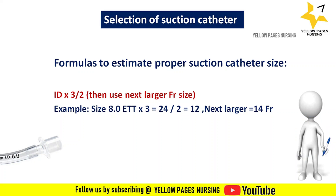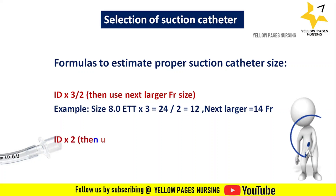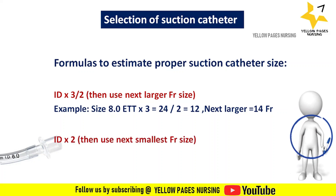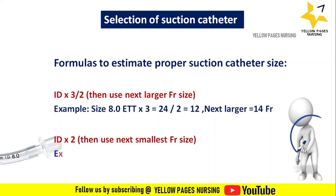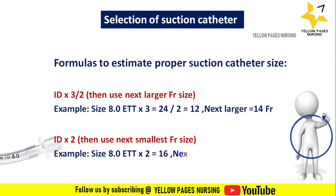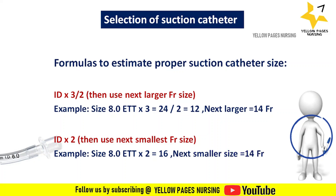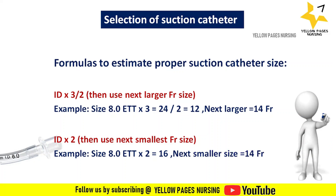Formula two: internal diameter × 2, then use the next smallest French size. For example, if the ET tube internal diameter is 8: 8 × 2 = 16. The next smallest size is 14 French.